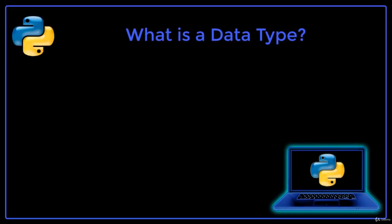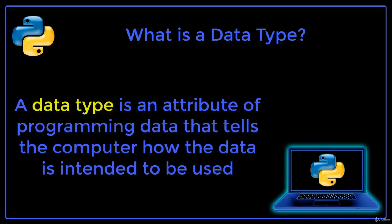In this lecture we will learn what a data type is in computer programming and the different data types that Python supports. A data type is an attribute of programming data that tells the program how the data is intended to be used.